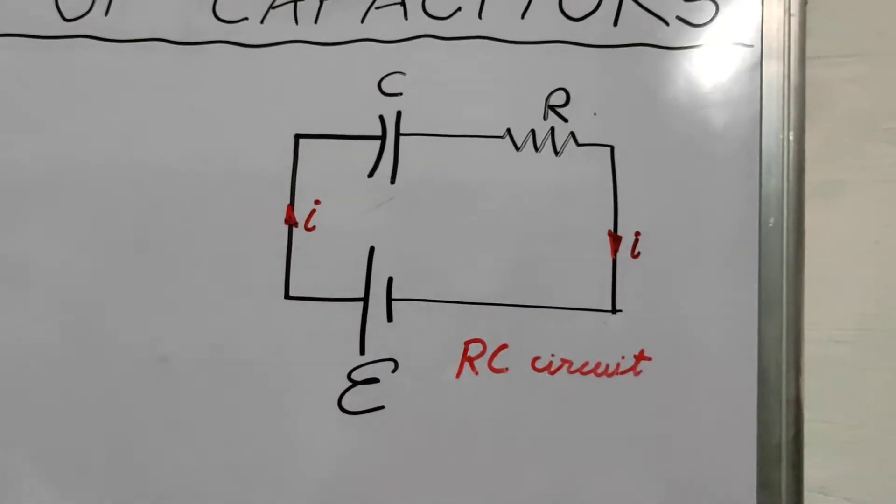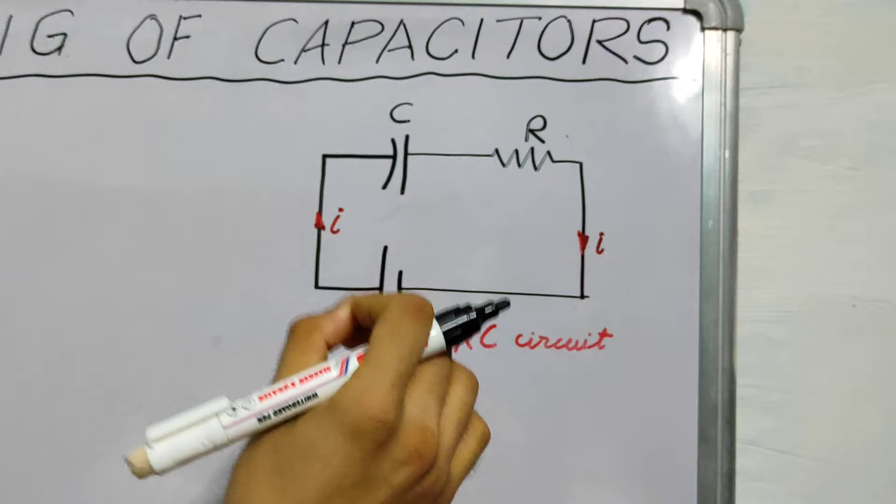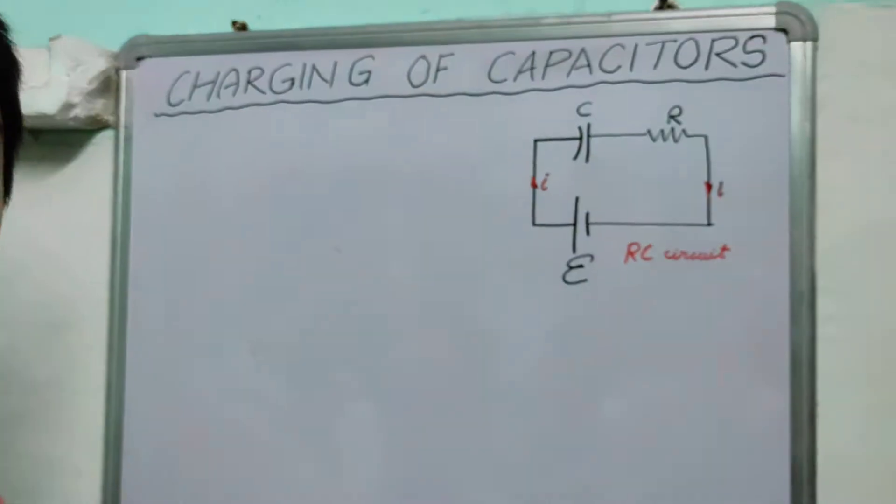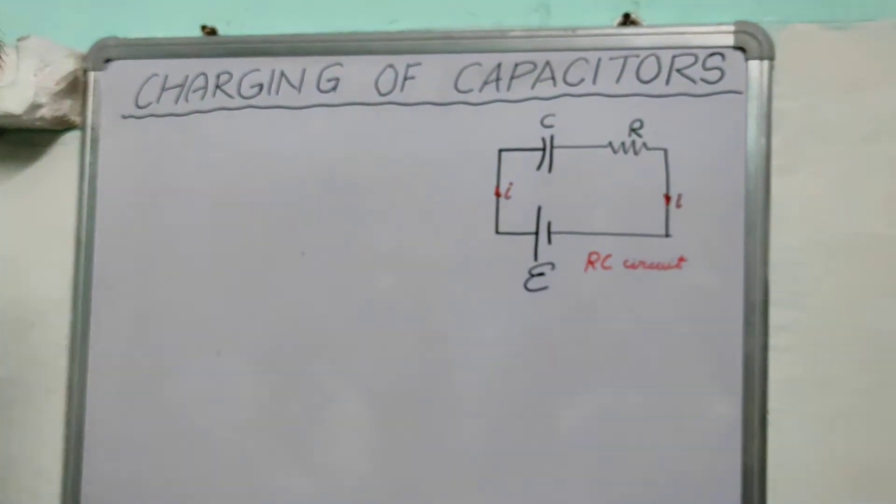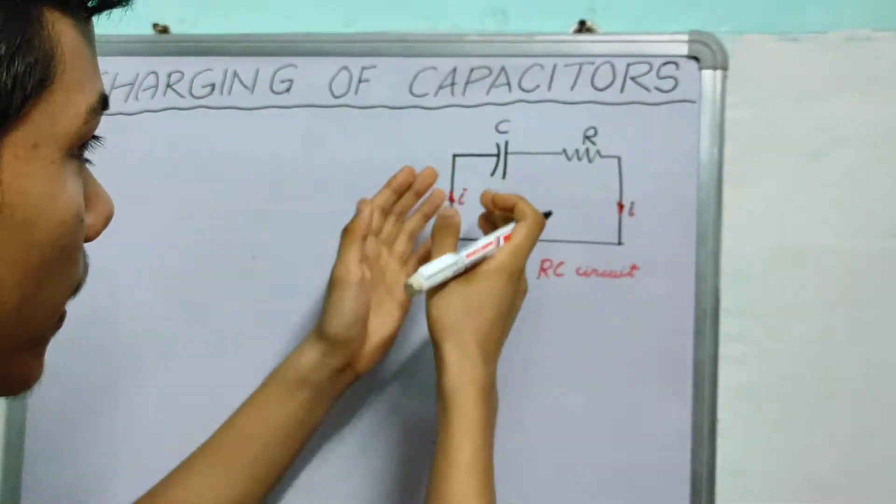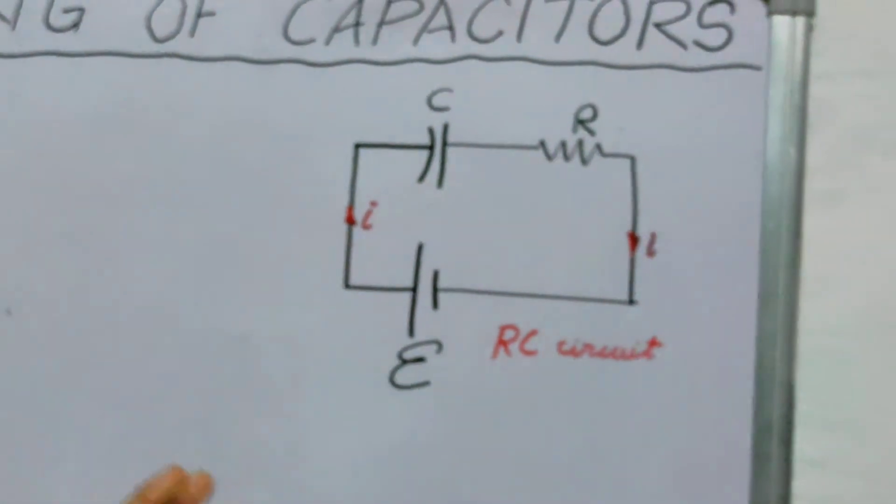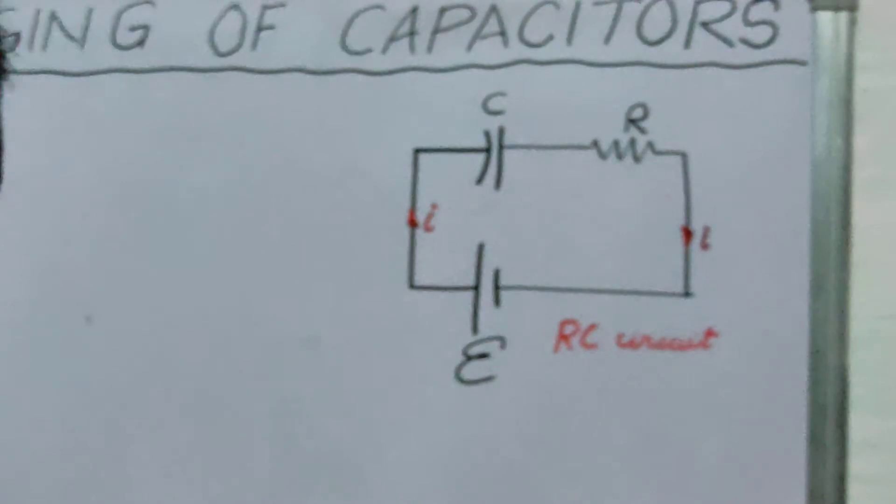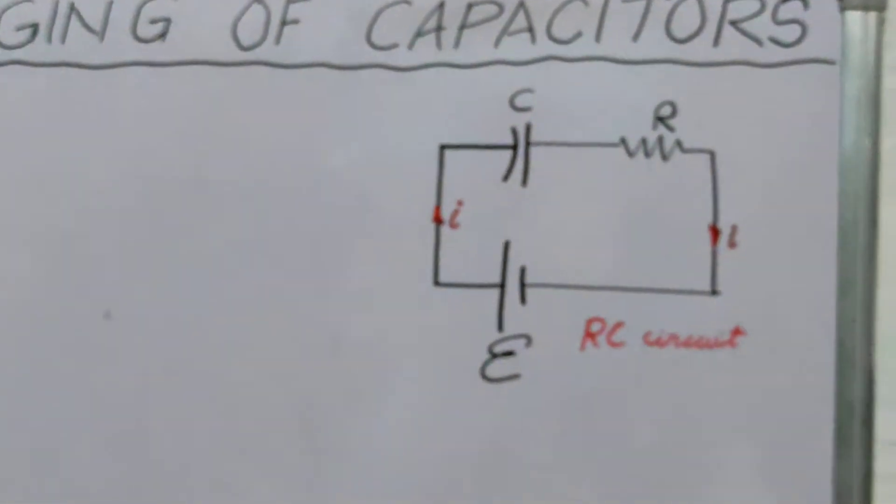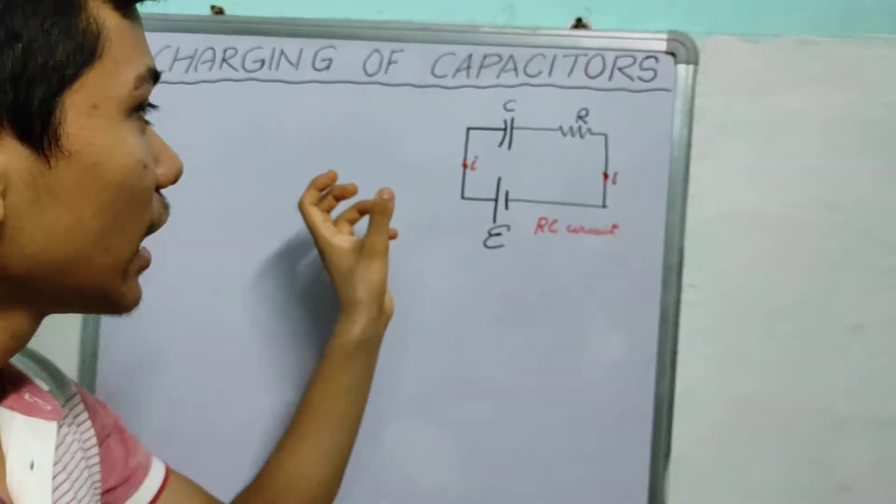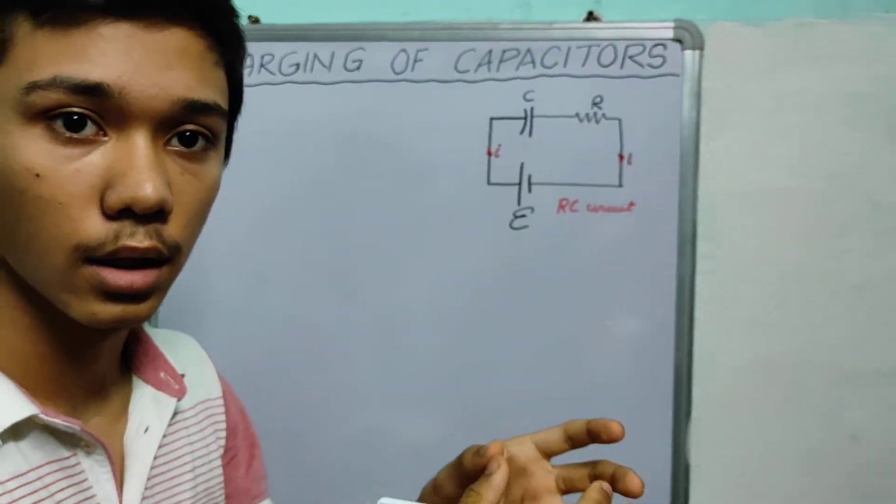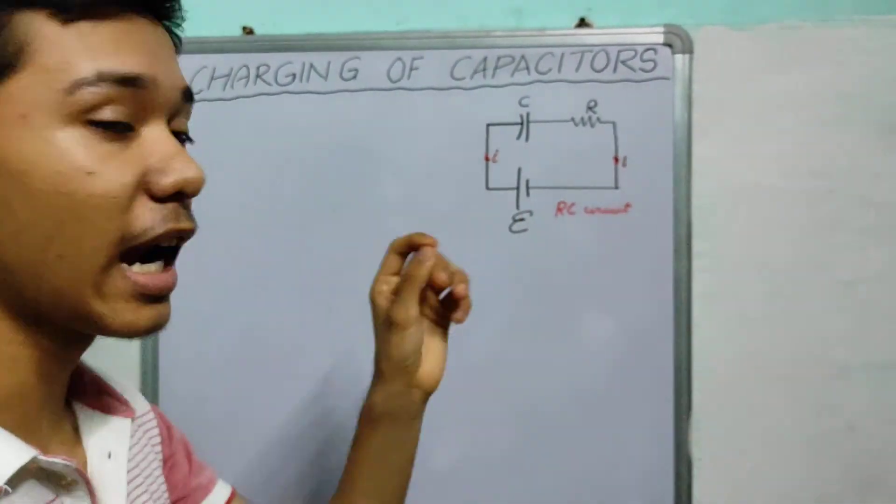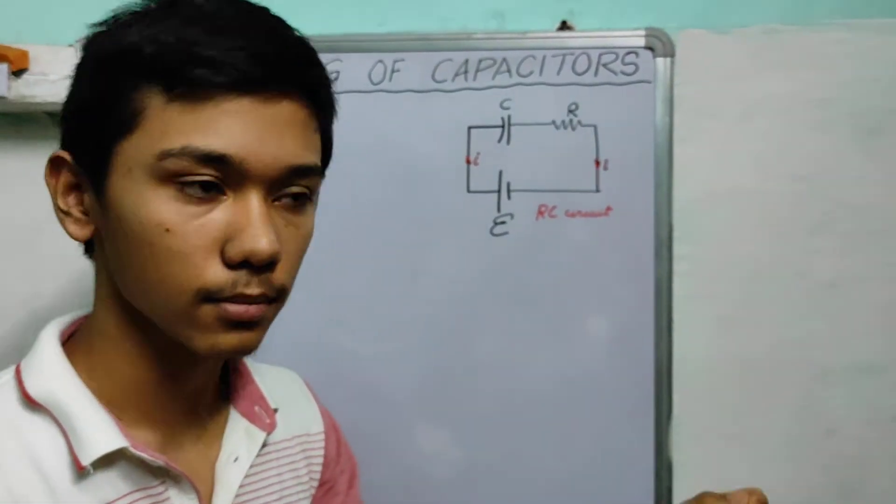Now we need to find how much charge is getting accumulated on the capacitor as a function of time. So as time passes, the charge on the capacitor will continuously increase. So it will keep on increasing. And we need to understand how does it increase. Now what I want you to understand is, it will not increase in discrete amounts. It will increase continuously. So we won't add up. We will integrate.